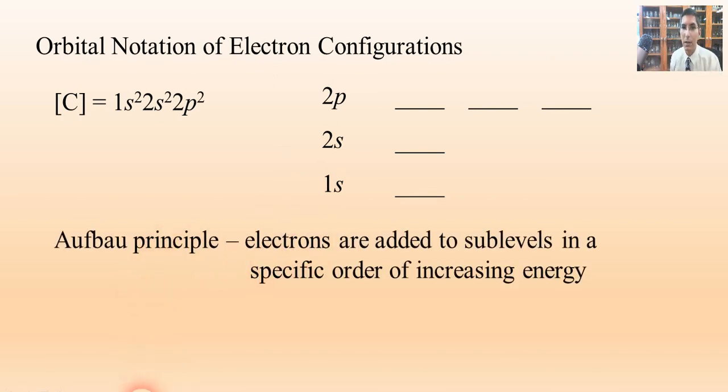The Aufbau principle says that we add electrons to these sublevels in a very specific order of increasing energy. That's why we do 1s first, and then 2s, and then 2p, and then 3s, and it goes in that very specific order. We don't add electrons in just random order. It goes in a very specific order, and that's the Aufbau principle, which basically comes from the German word. Aufbau is the German word for in ascending order, from what I understand. So we're always going to start with 1s2, so we'll put 1s, and then we have 2. And don't forget that each line or each orbital can have a maximum of two electrons in it.